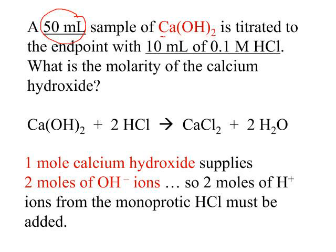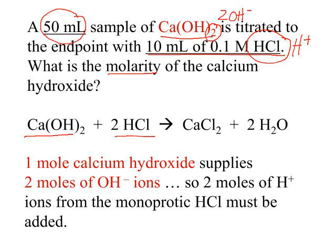We have 50 milliliters of calcium hydroxide that's titrated with 10 milliliters of 0.1 molar hydrochloric acid. The HCl delivers one proton, but the calcium hydroxide delivers two moles of hydroxide ion. We want to solve for the molarity of the calcium hydroxide. From the balanced equation, you can see that two moles of HCl are needed for every one mole of calcium hydroxide, because one mole of calcium hydroxide supplies two moles of hydroxide ion, so it requires two moles of hydrogen ion to neutralize it.